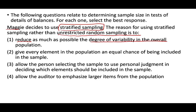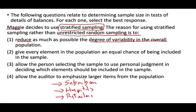Stratified sampling is when you take your whole population and partition it into subpopulations. For example, let's assume you are auditing a utility company. That utility company might have regular customers — people that live in suburban areas — they might also have hospitals, large retailers, and hotels.